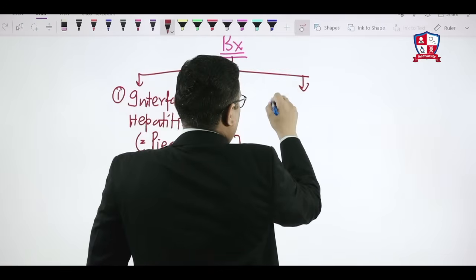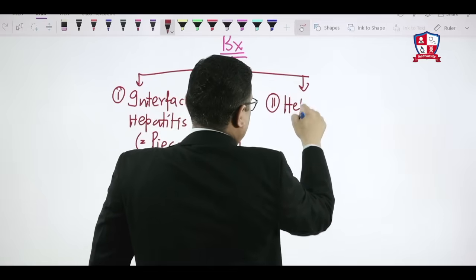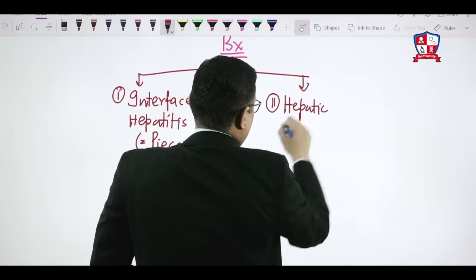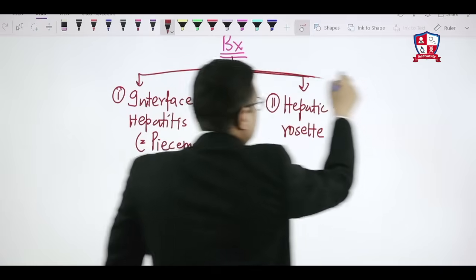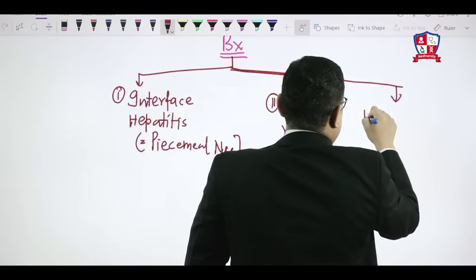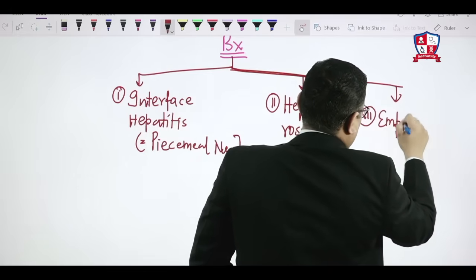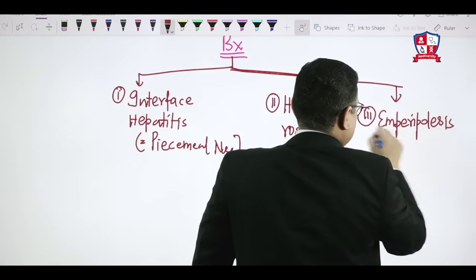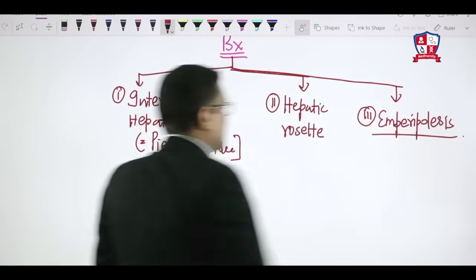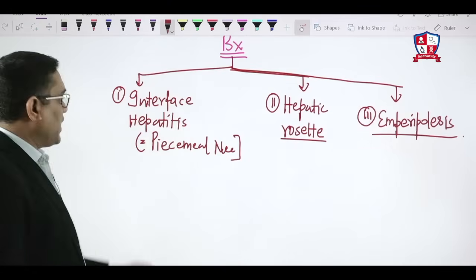The second biopsy finding is hepatic rosettes, and the third is emperipolesis — lymphocytic cells showing emperipolesis. These are the three important histological findings of autoimmune hepatitis.